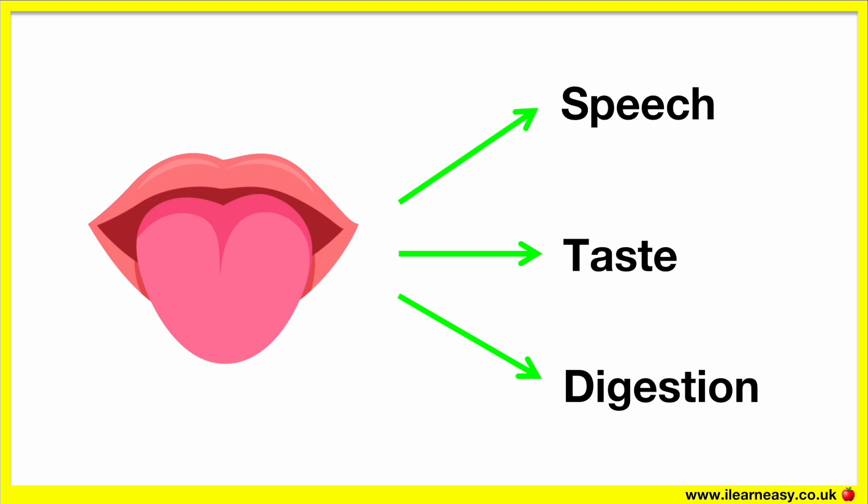The tongue has a rough surface consisting of small bumps. These are called papillae. These help with gripping food when chewing and they contain taste buds.